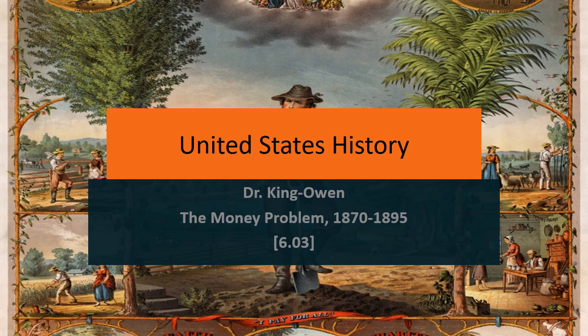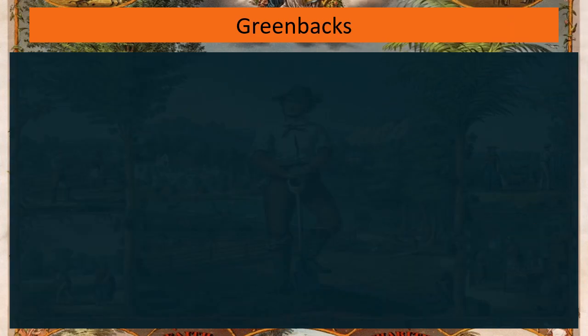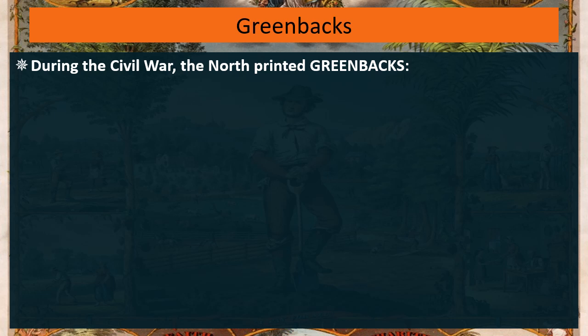6.03 is the target for this lecture. The first thing we talk about are greenbacks. During the Civil War, the North — the United States, the Union — printed greenbacks. This was a form of paper money named for the green coloring on the back.